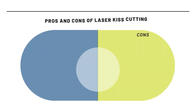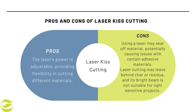Laser kiss cutting is available, and the pros are that the laser's power is adjustable, providing flexibility in cutting different materials. The cons are that using a laser may shear off material, potentially causing issues with certain adhesive materials. Laser cutting may also leave behind char or residue, and its bright beam is not suitable for light-sensitive projects.